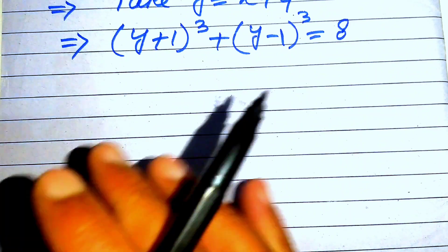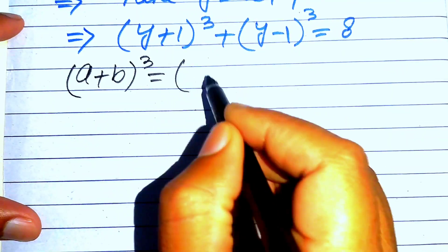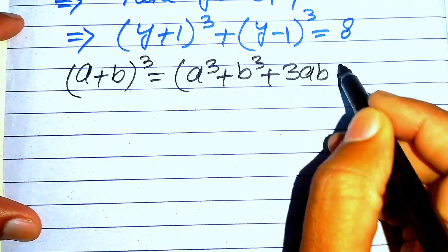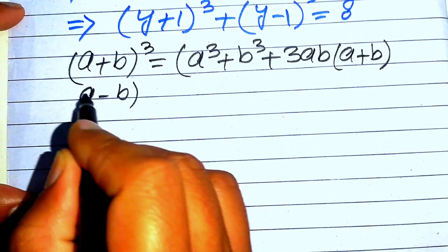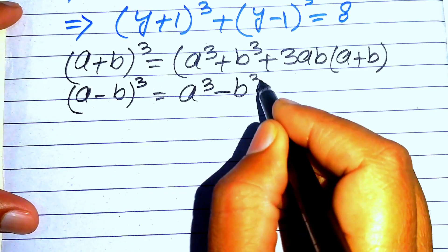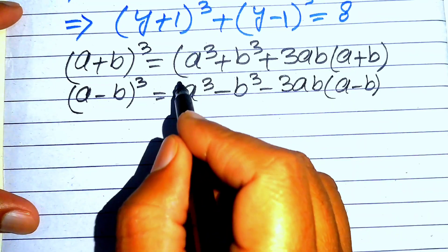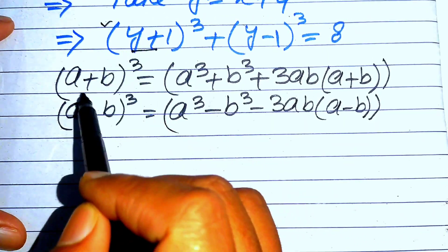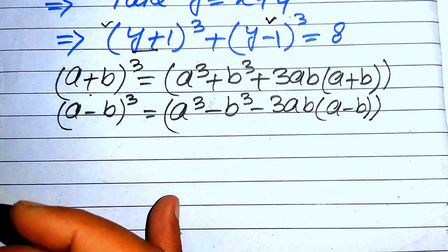In the next step, we use the cubic formulas: (a+b)³ = a³ + b³ + 3ab(a+b), and (a−b)³ = a³ − b³ − 3ab(a−b). We apply the positive cubic formula to the first term and the negative cubic formula to the second term.